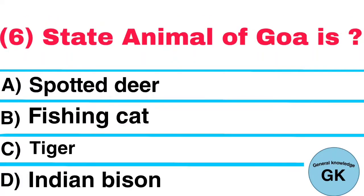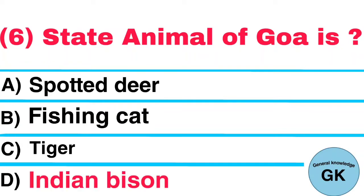Question Number 6. State Animal of Goa is: A. Spotted Deer, B. Fishing Cat, C. Tiger, D. Indian Bison. Answer: Indian Bison.